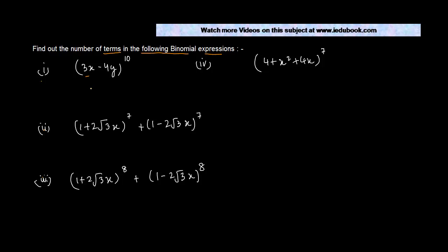Now normally a binomial expression is written as x plus a to the power n, where n is the index, and x and a are basically two real numbers forming part of the binomial expression.